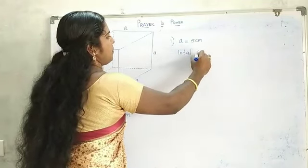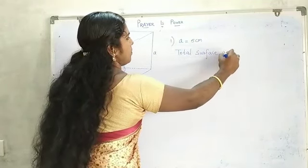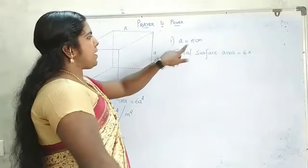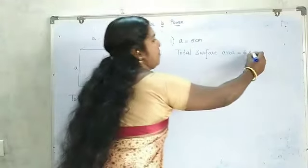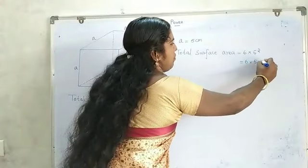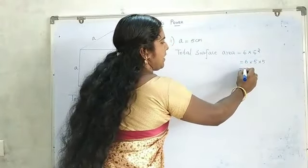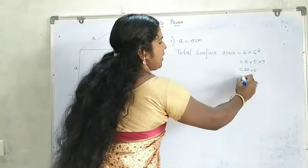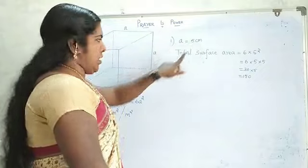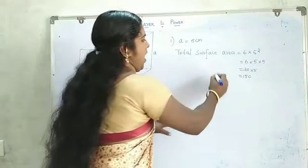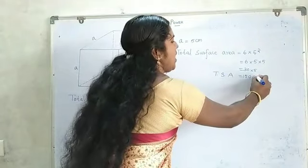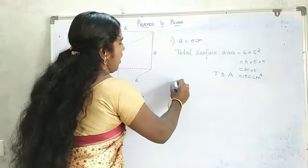Total surface area is equal to 6a². That is 6 into a, where a means 5 centimetres. So a² means 5² which equals 5 into 5, which is 25. Then 6 into 25 equals 150. The unit in our question is centimetre, therefore the answer is 150 centimetre square.